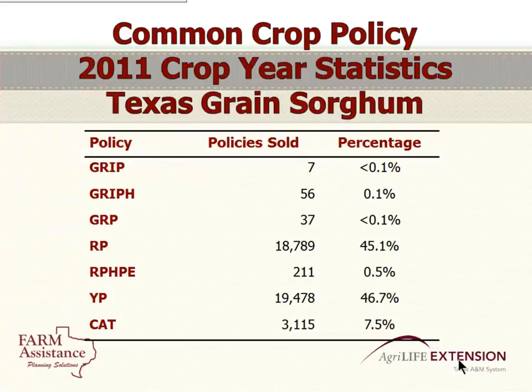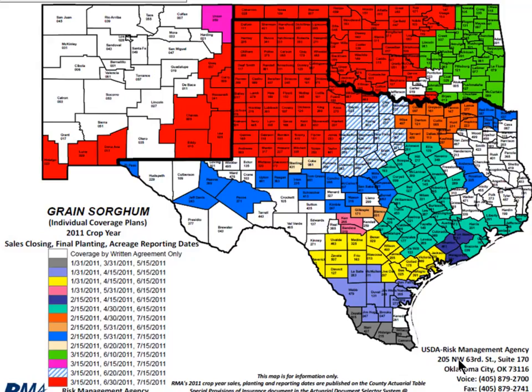Grain sorghum is about the same as corn: 45% is RP, 46.7% is YP, and 7.5% CAT. Most of the other policies aren't real popular — less than 1% each. The grain sorghum planting date, that red area goes all the way up into Oklahoma, and that's June 30th. Wheat is a little bit more like cotton: 60.9% is RP, 26.3% is YP, and 11.8% CAT, so there's just a little bit more CAT on wheat. Final planting date there is November 15th.